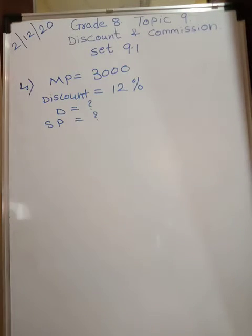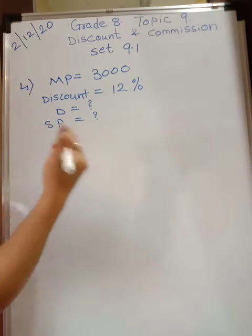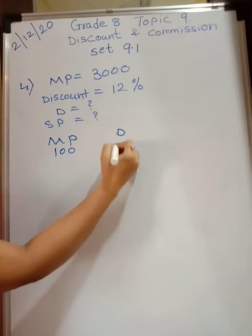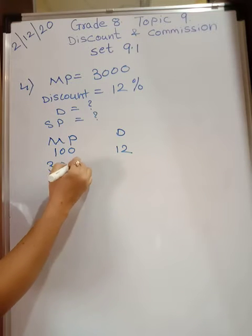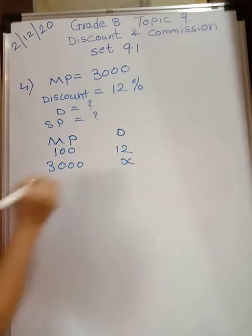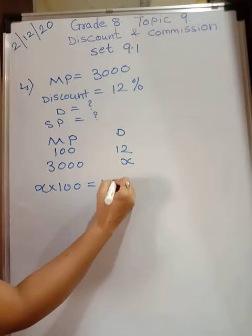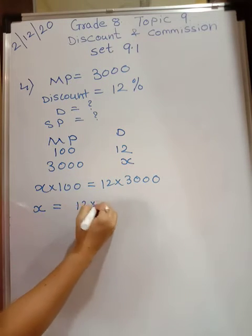The fourth problem: the marked price of the fan is rupees 3000 and the shopkeeper gave 12 percent discount. Find the total discount and the selling price. Discount is 12 percent means if marked price is 100 rupees, discount is 12 rupees. Now marked price is 3000, so discount is x rupees. Cross multiply: x into 100 equals 12 into 3000.